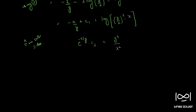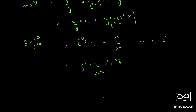The final answer is y cubed equal to c2 times x squared times e raised to minus x by y, where c2 equals e raised to c1. So the solution is y cubed equal to cx squared times e raised to minus x by y.